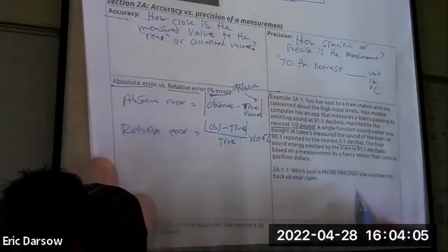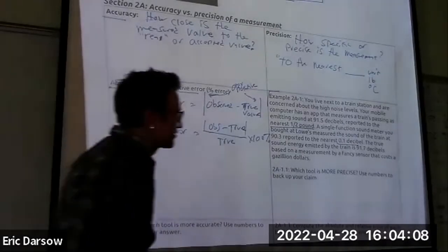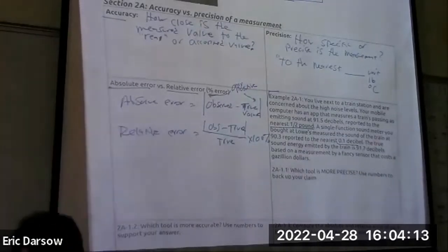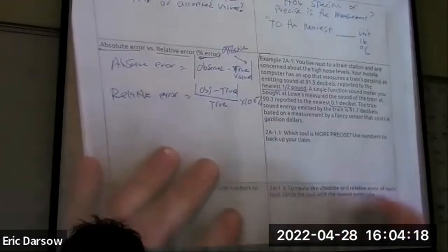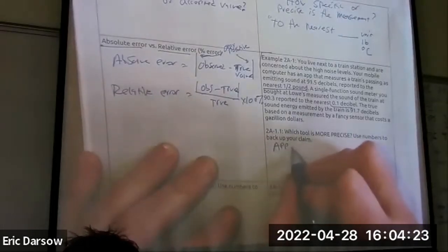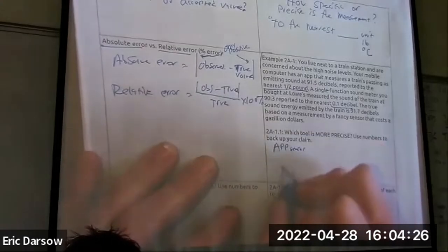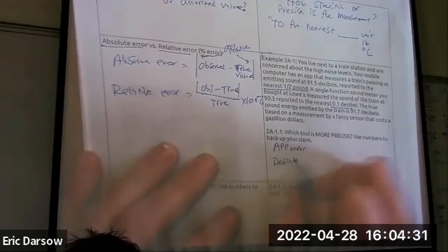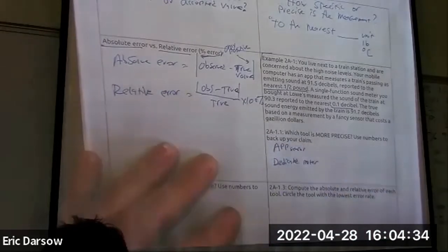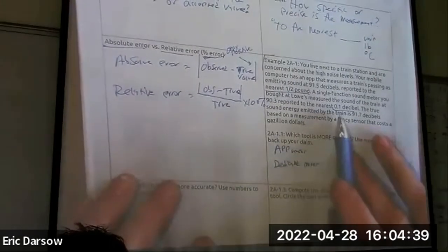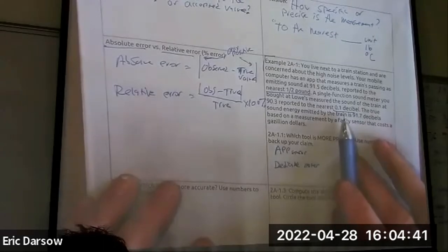These questions — this is exactly how they've used them on the tests. The first thing they'll ask is: which tool is more precise? Use numbers to back up your claim. Organize it like this: make a list of your two tools. We've got an app sound sensor and we're comparing it to a dedicated meter.